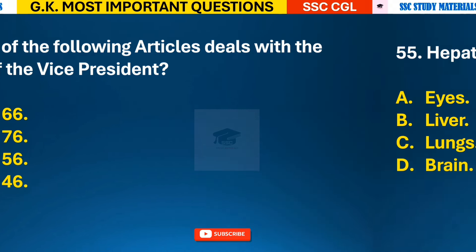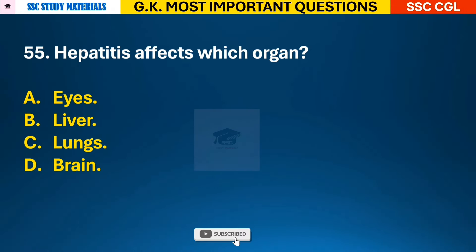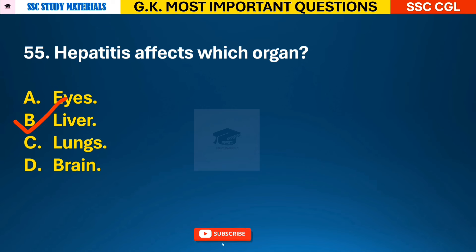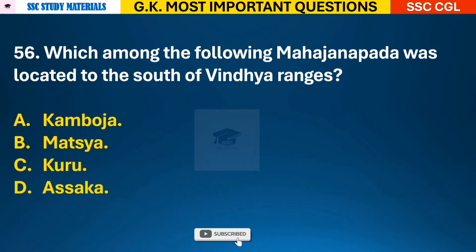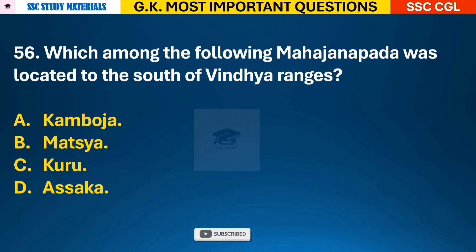Question 55: Hepatitis affects which organ? Answer B - it affects the liver. Question 56: Which among the following Mahajanapadas was located to the south of Vindhya Ranges? Answer D - Asaka.